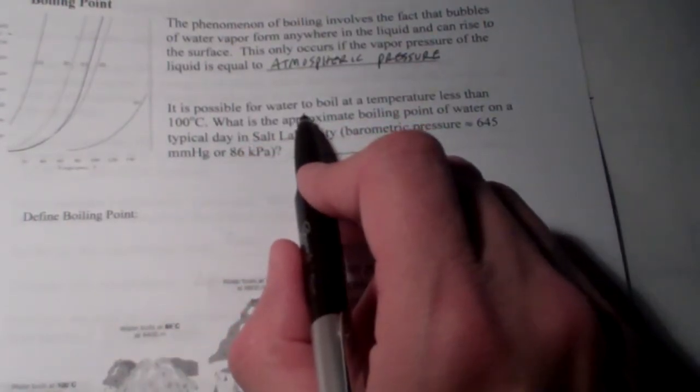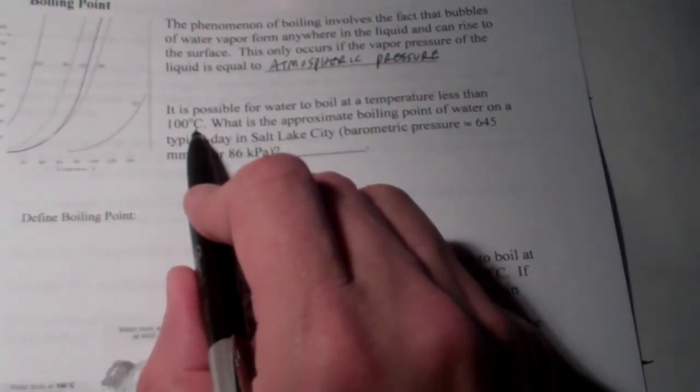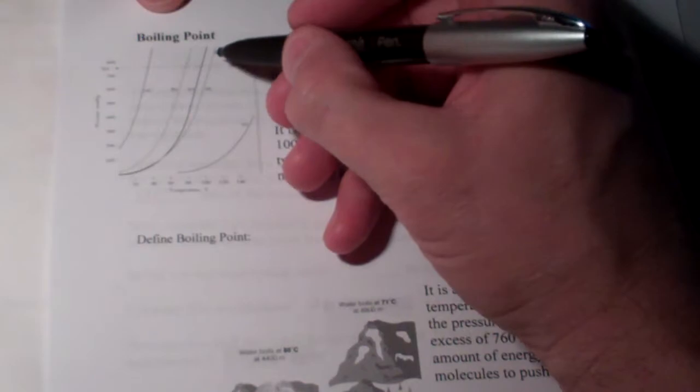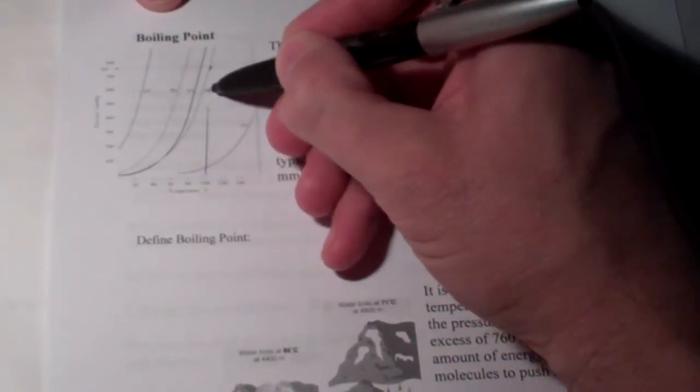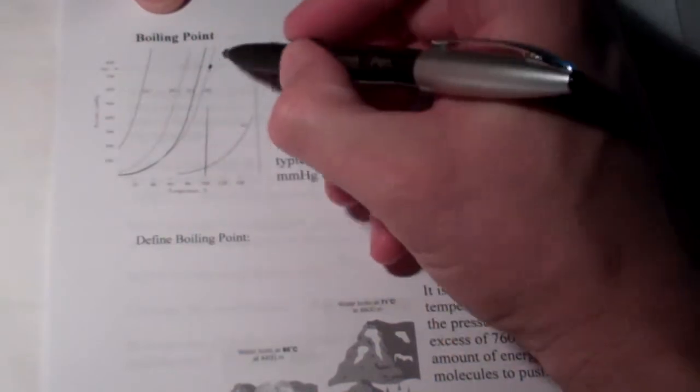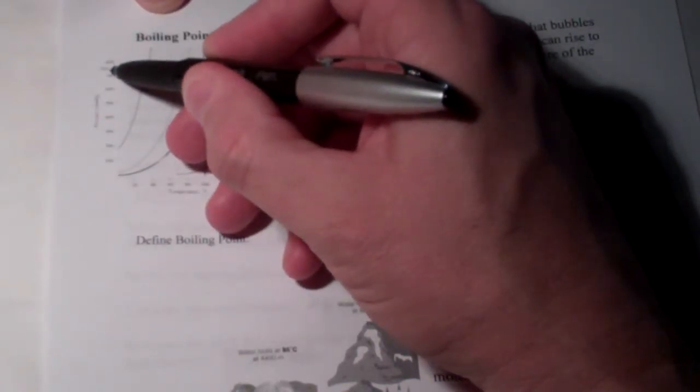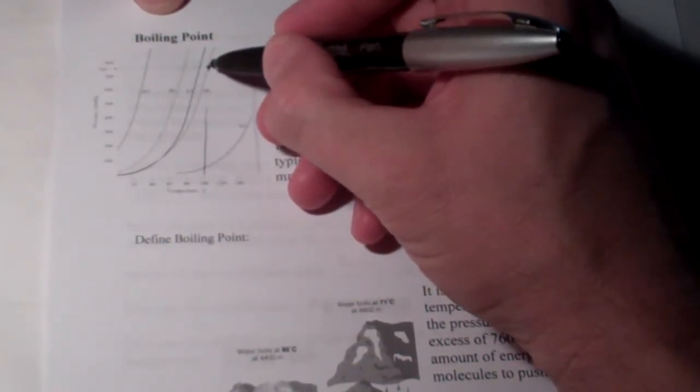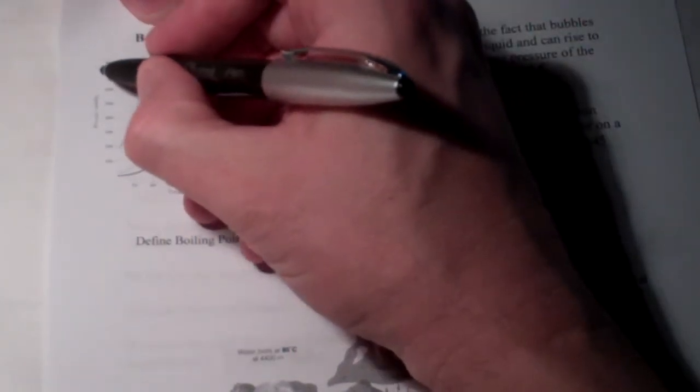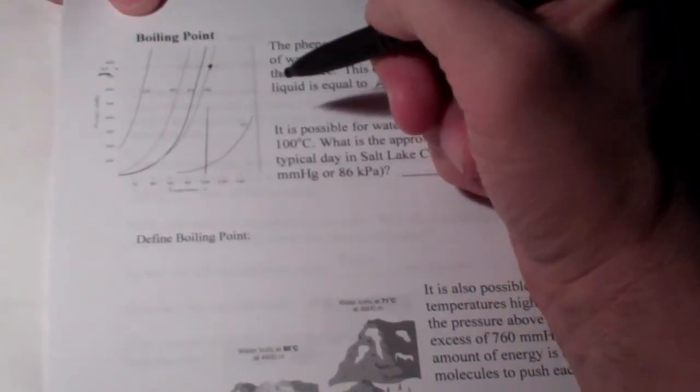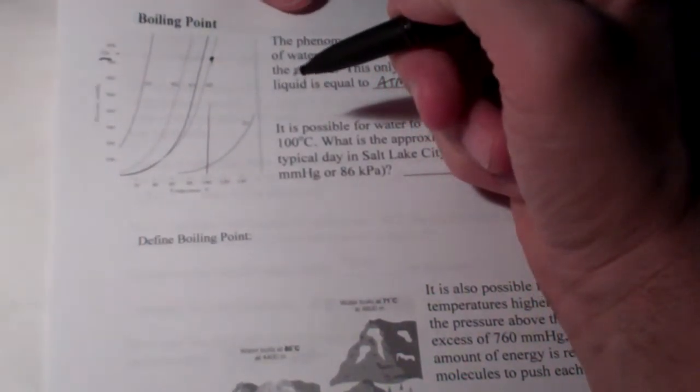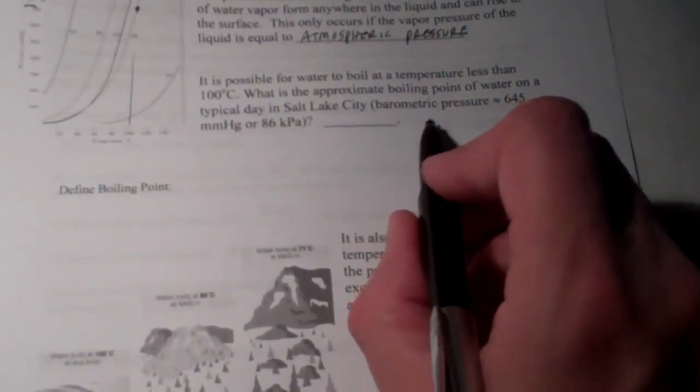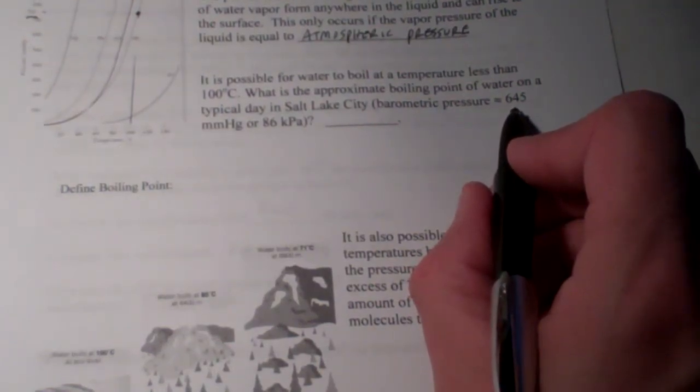It is possible for water to boil at a temperature less than 100 degrees Celsius. You can see on this graph over here, at 100 degrees Celsius, if we go up here to this line right here, letter D represents water, the vapor pressure of water is 760 millimeters of mercury at 100 degrees Celsius. That means when the vapor pressure of the liquid is equal to the atmospheric pressure, and 760 millimeters of mercury is what we call standard atmospheric pressure, water begins to boil. In Salt Lake City, where we live, the atmospheric pressure on a typical day is about 645 millimeters of mercury.